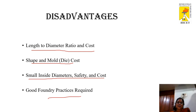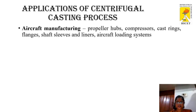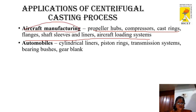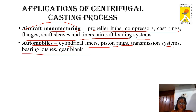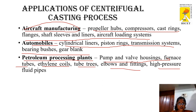Applications of centrifugal casting include: propeller hubs, compressors, cast rings, shaft sleeves and liners, and aircraft loading systems in aerospace manufacturing. In automobiles: cylindrical liners, piston rings, transmission systems, bearing bushes, gear blanks. In petroleum processing plants: pumps, pump and wall housings, furnace tubes, ethylene coils, tube trees, elbows and fittings, and high pressure fluid pipes.